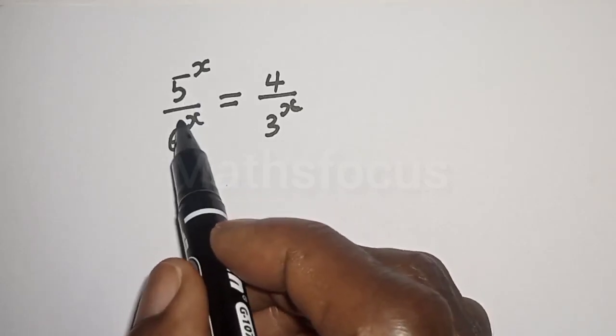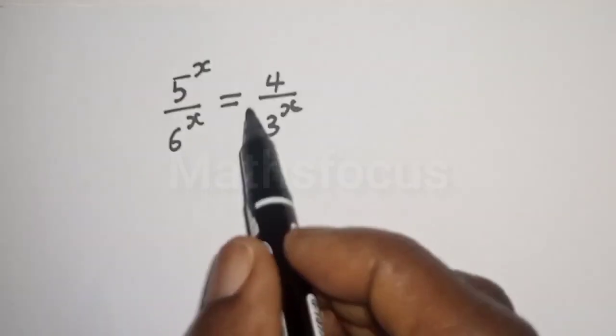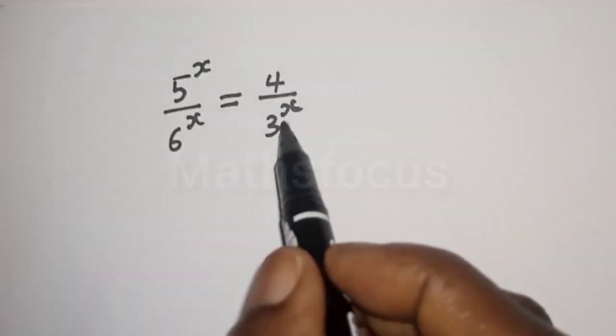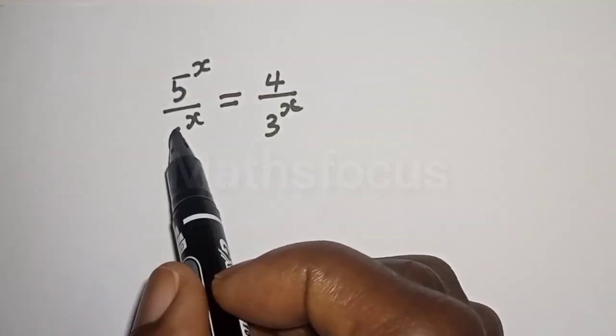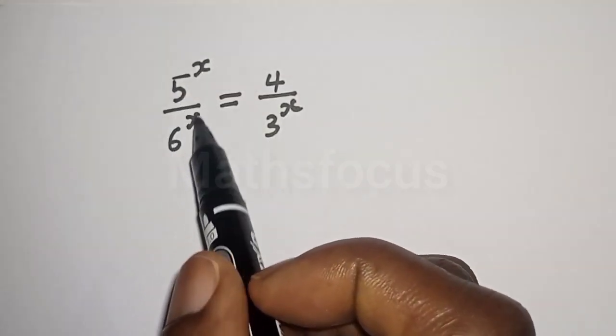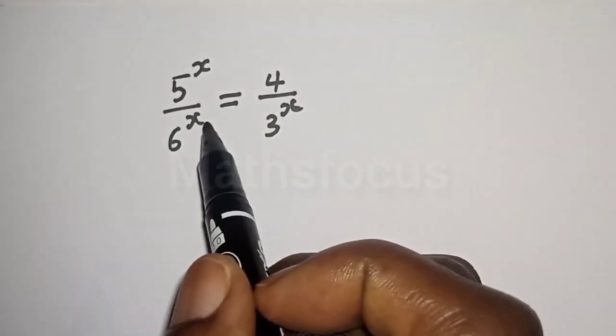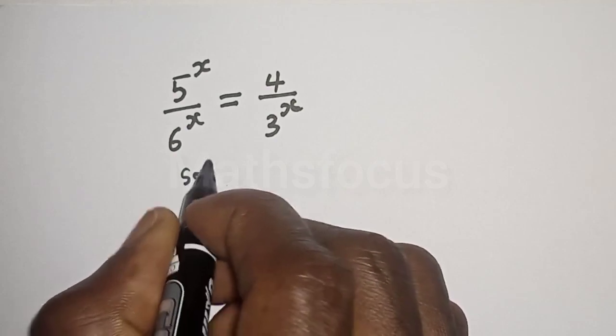5 raised to power x divided by 6 raised to power x is equal to 4 divided by 3 raised to power x. I want to find the value of x from this given equation.